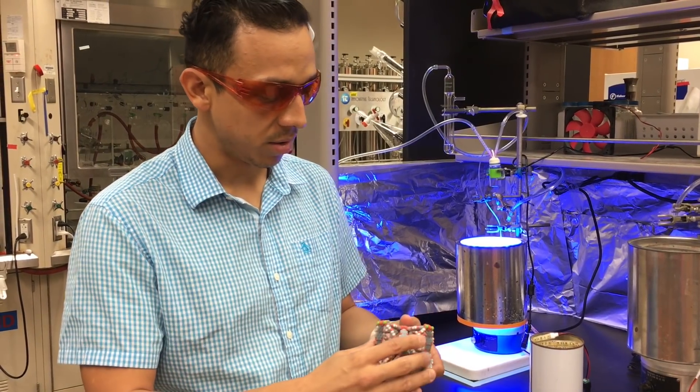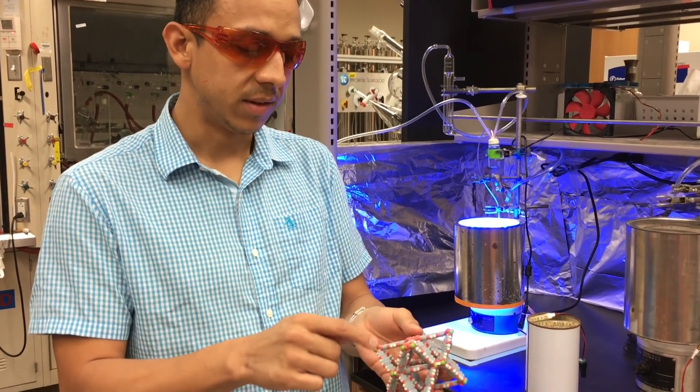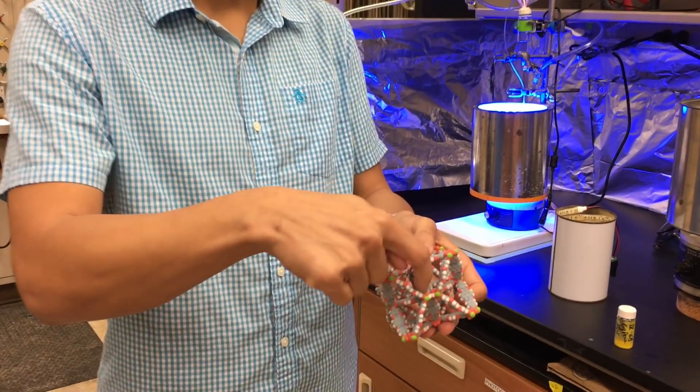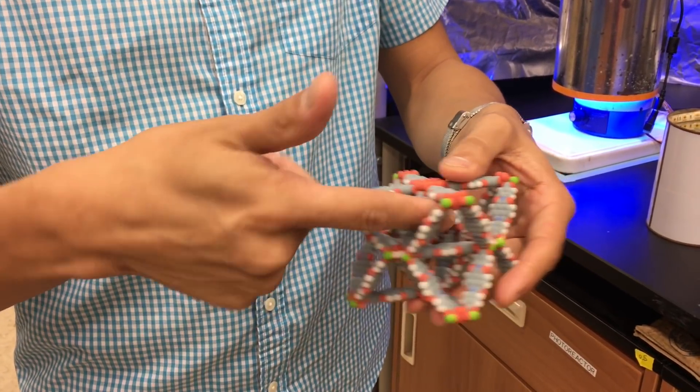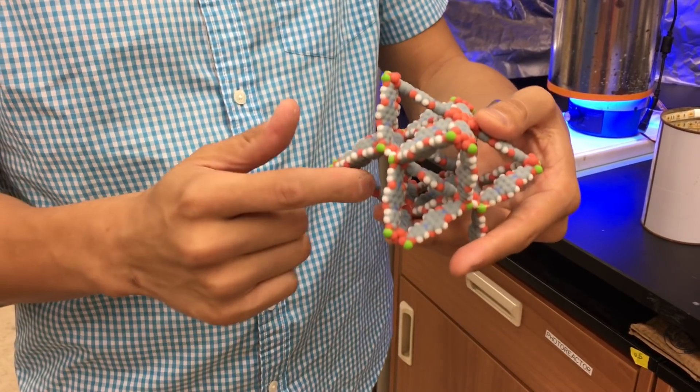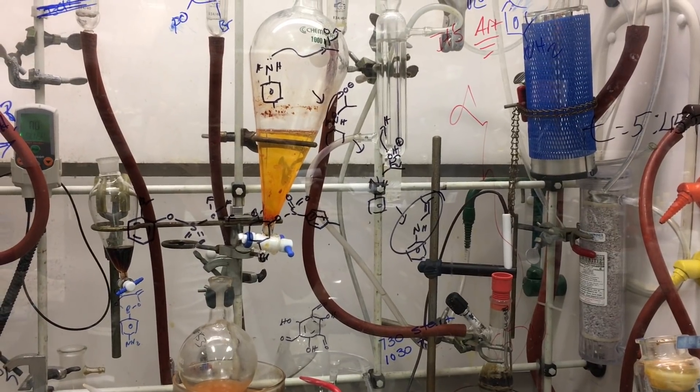So this is a 3D printed model of one of those models. As you can see here, the way the molecules are arranged are in such a way that they leave a lot of empty space in between. And that empty space, we can use it to store gases or to do chemical reactions inside.